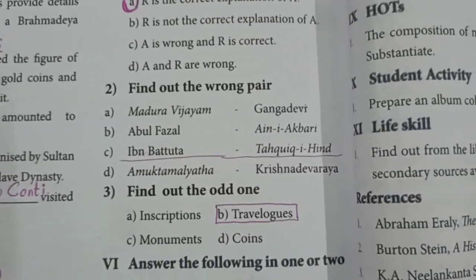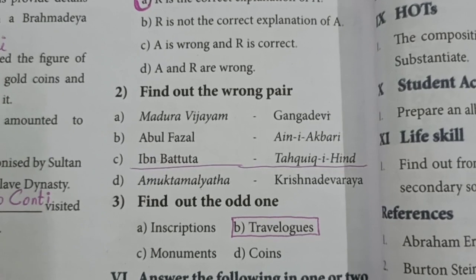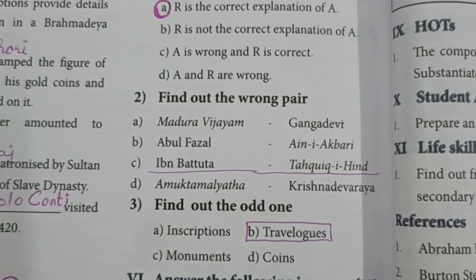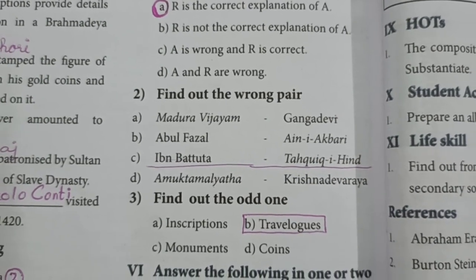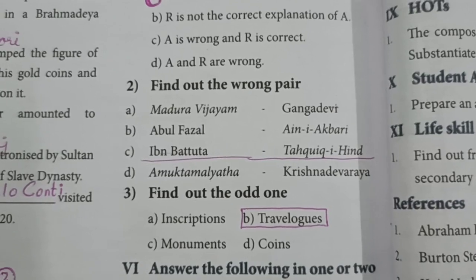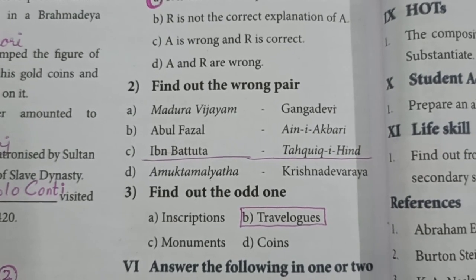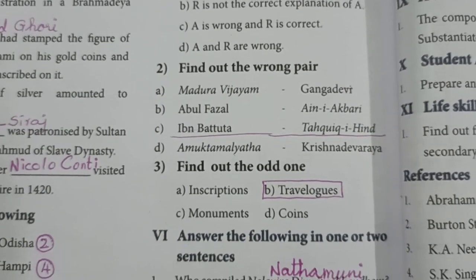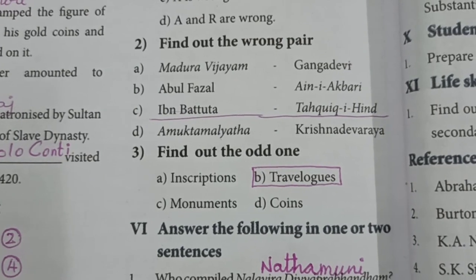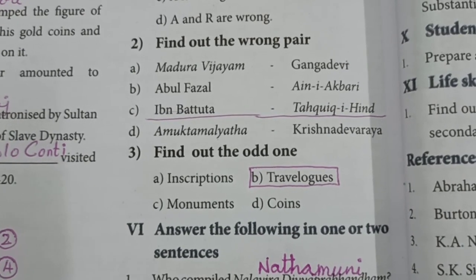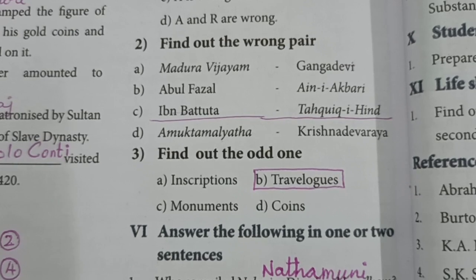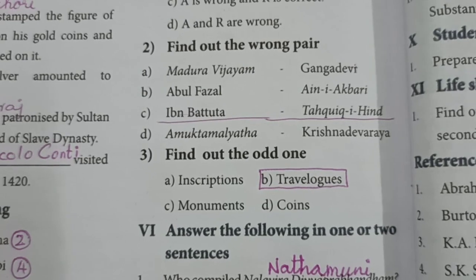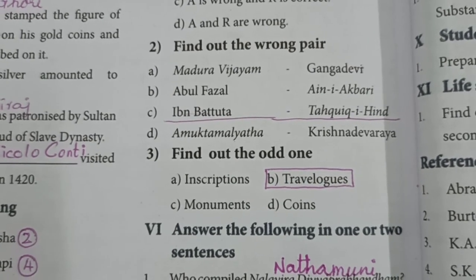Find out the wrong pair. One side lists books written by different people. The wrong pair here is Ibn Battuta — Tahik-E-Hind, because that is not the book written by Ibn Battuta. Find out the odd one: Inscriptions, Travelogs, Monuments, and Coins. Travelogs is the odd one because the other three belong to the primary sources of history.